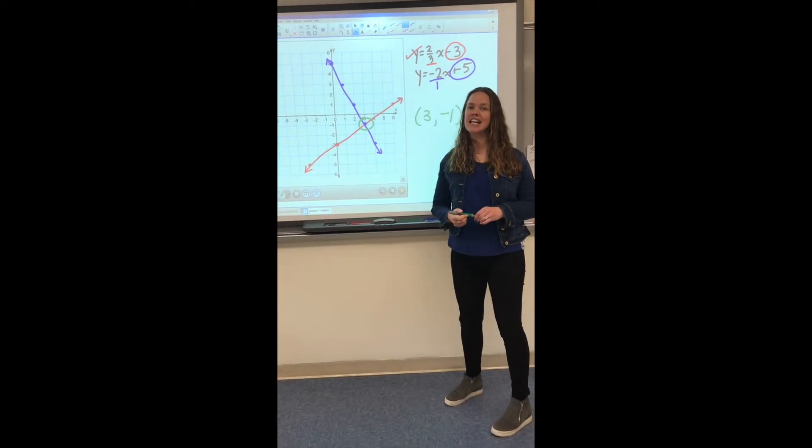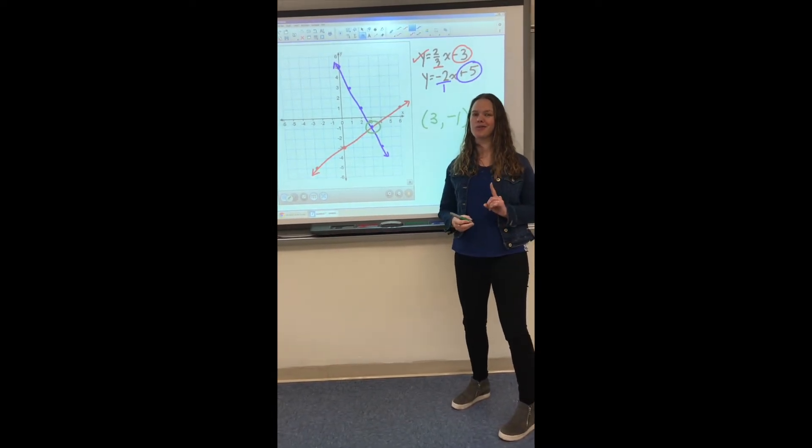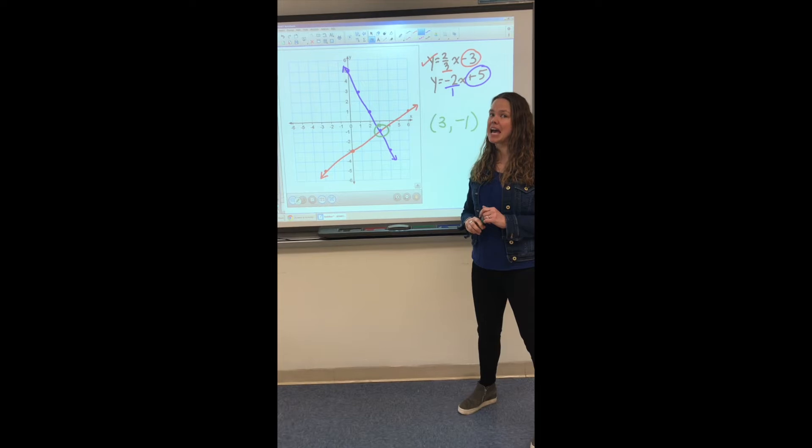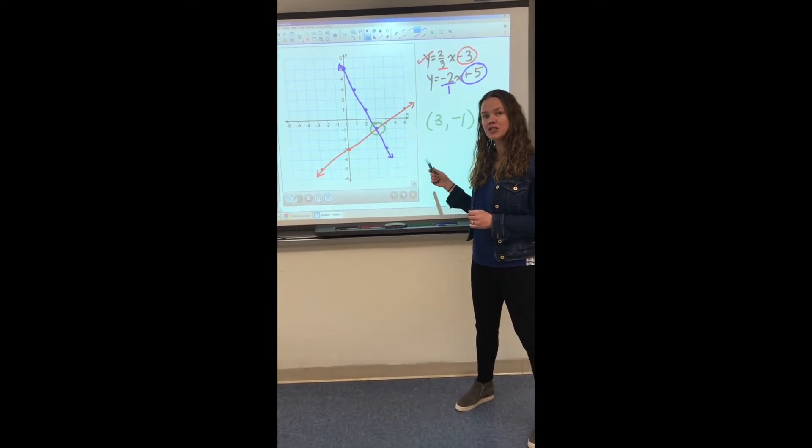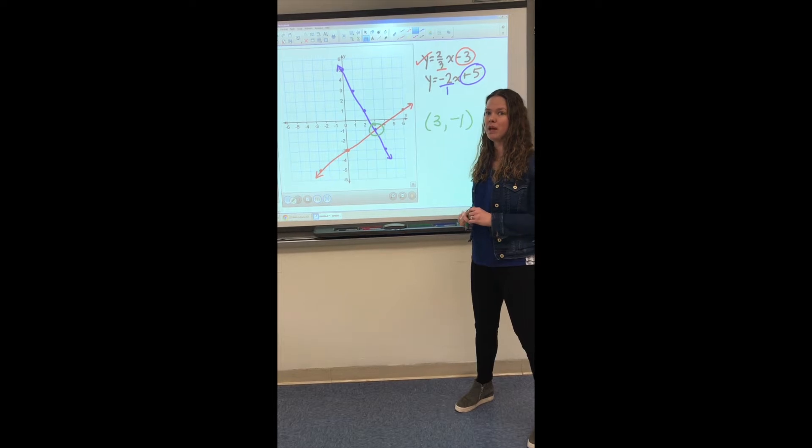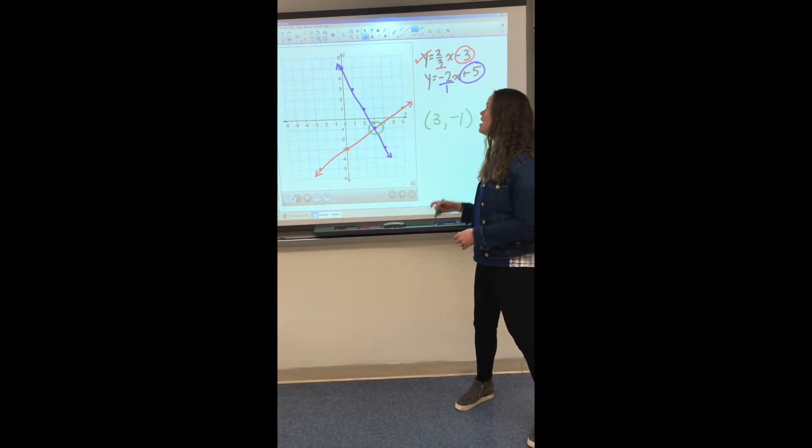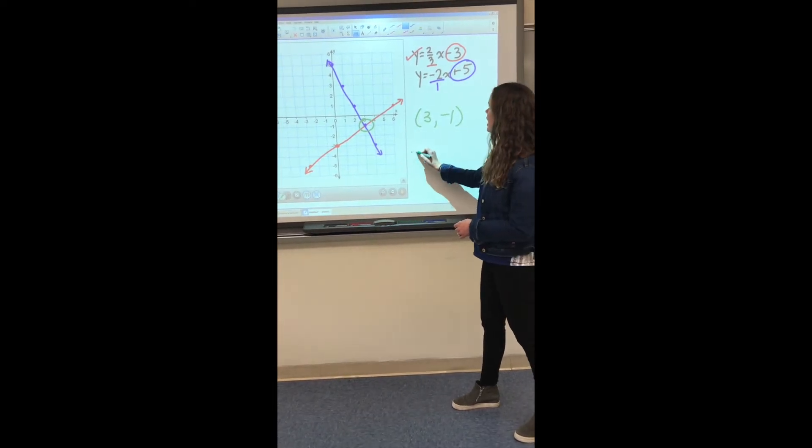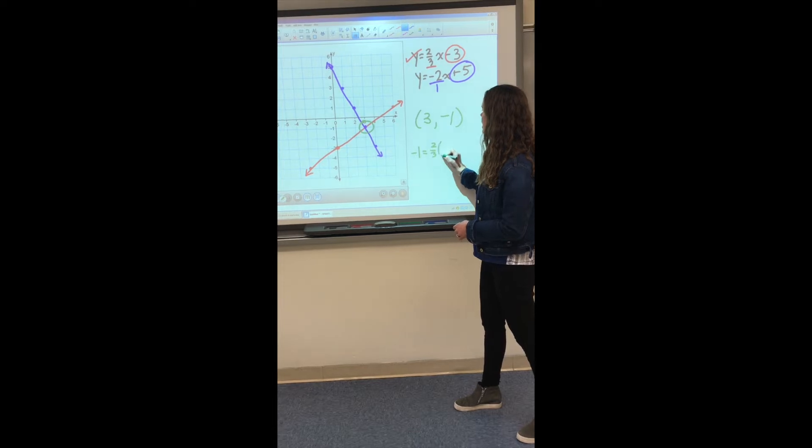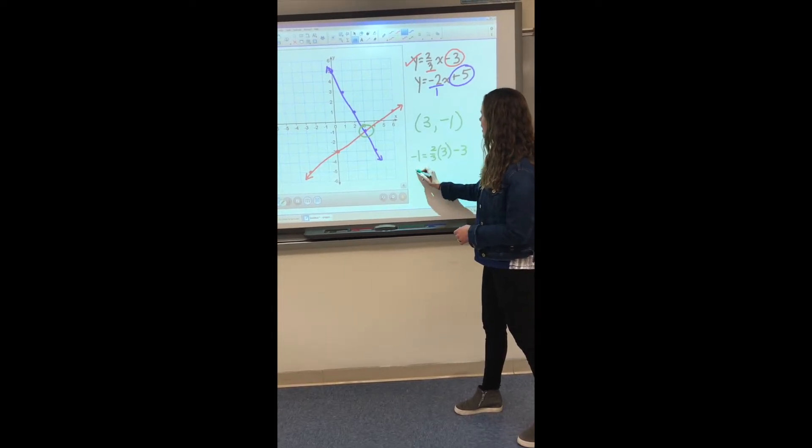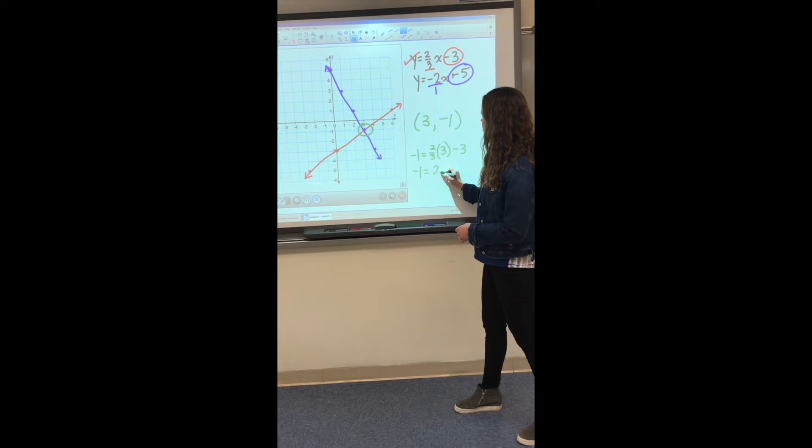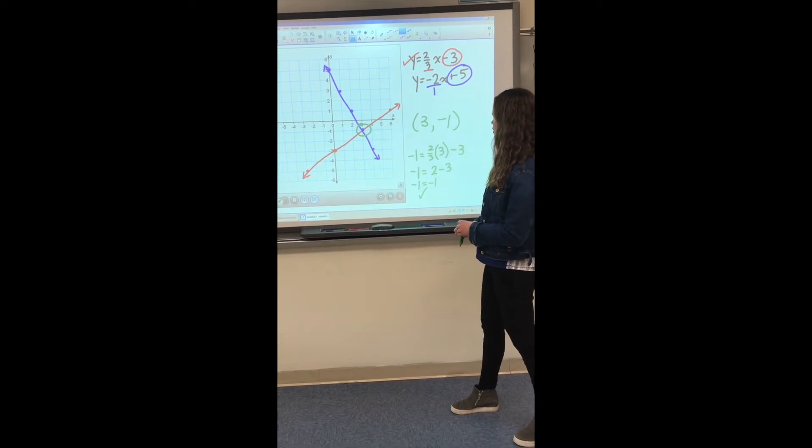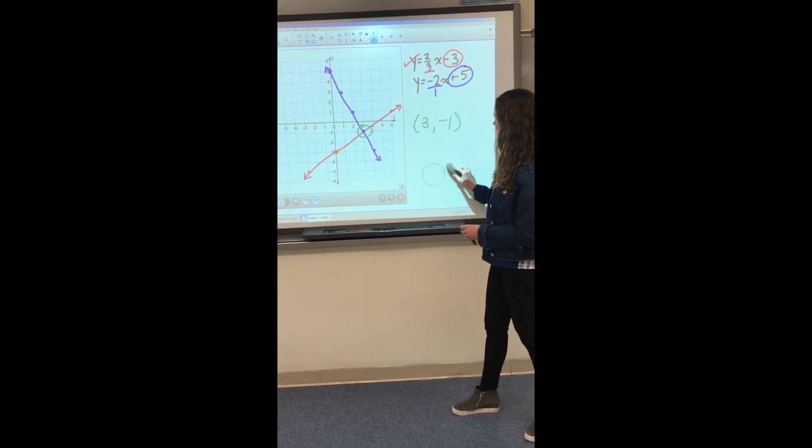You can check your answer to see if this is truly a solution for both of the equations by plugging this ordered pair into both of your equations and see if it actually does work. So that would be a good test-taking strategy to make sure that you did pick the right ordered pair or that you did correctly graph it. So we can do that very quickly here. This is our y value, this is our x value. So negative 1 is equal to 2 thirds times 3 minus 3. So 2 thirds of 3 is 2, and 2 minus 3 is negative 1.